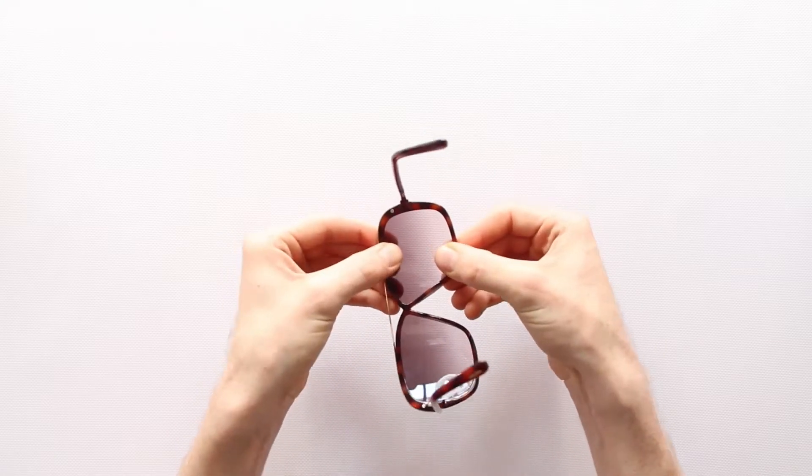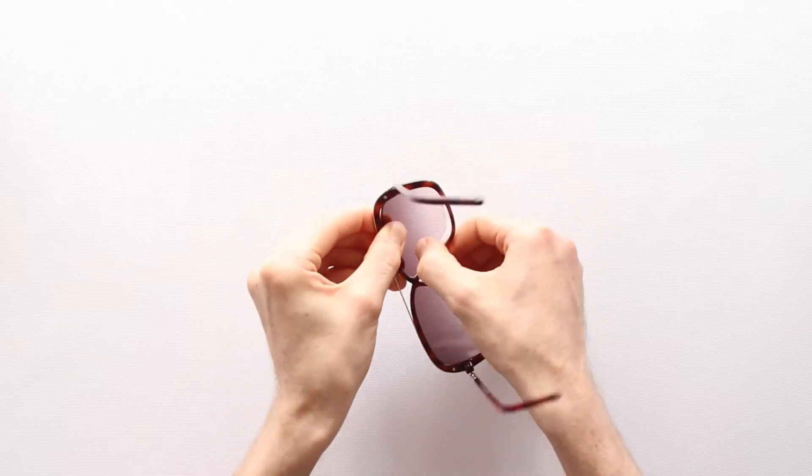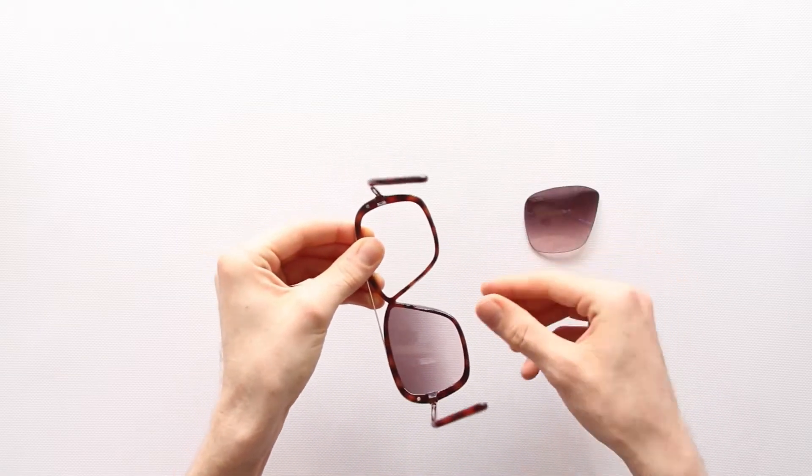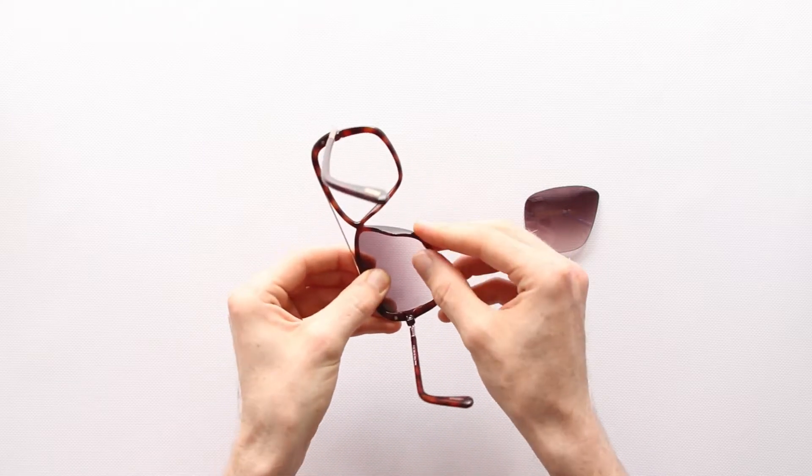After applying heat, pinch the frame at the sweet spot, the thinnest area where there is the most flexibility. Pinch the lens as close as you can to that spot as well and tug away at the frame to twist the lens out.